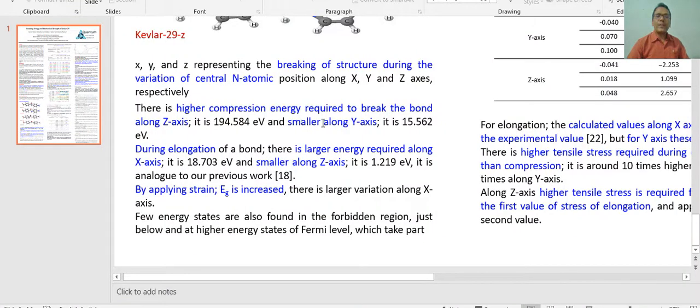This is the result shown here. There is higher compression energy required to break the bond along Z-axis, and this is the data: 1.94584 electron volt, and smaller along the Y-axis. So along its length, the energy is higher, and along its transverse direction, it is smaller. During elongation of the bond, there is larger energy required along X-axis, that is 18.703 electron volt, and along its length it is 1.219 electron volt. This is comparable to our previous work. Before this study, we have performed similar work in PEO-based polymer which has been recently published in International Journal of Ionics. This is also a very good work and widely accepted by scientific community.